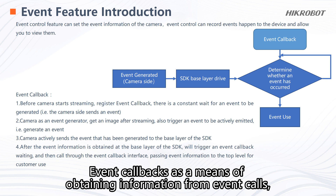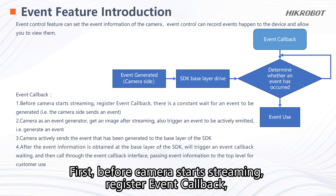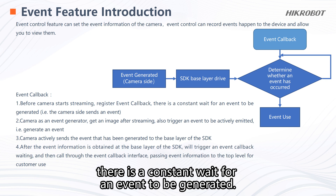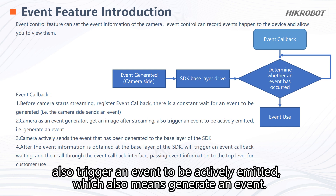Event callbacks as a means of obtaining information from event calls mainly includes the following areas. First, before the camera starts streaming, register an event callback — there is a constant wait for an event to be generated. Second, the camera acts as an event generator and gets an image after streaming, also triggering an event to be actively emitted, which means generating an event.